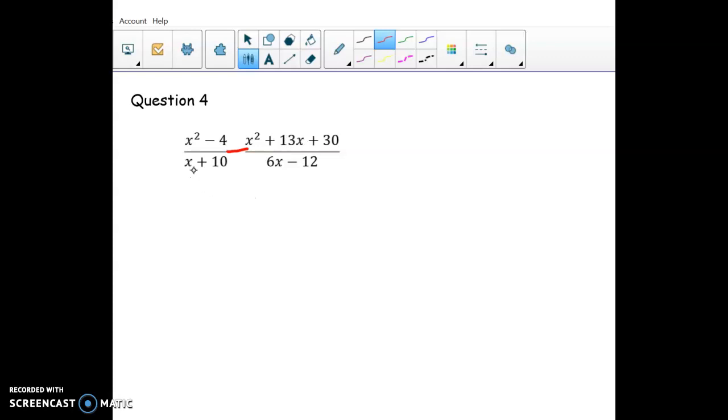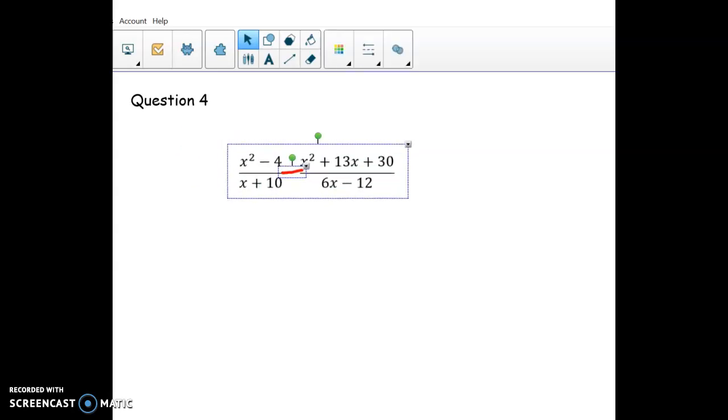So I'm going to move this over here and factor everything that I can. The x plus 10 is pretty much already factored, nothing to do there. Up top, the x squared minus 4—that's a square minus square.